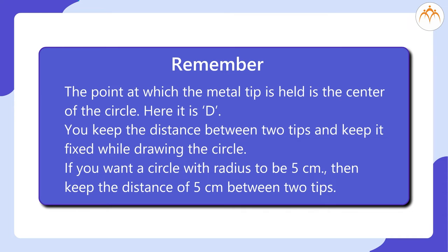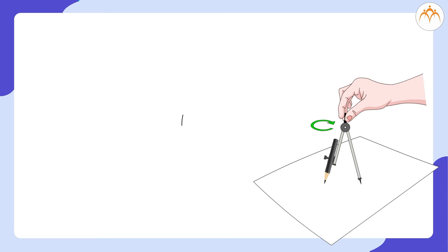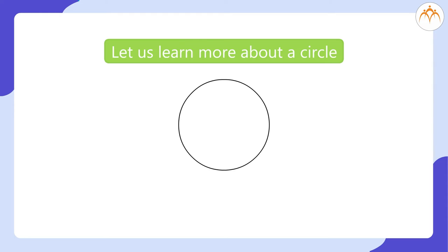You can choose the distance between two tips and keep it fixed while drawing the circle. If you want a radius to be 5 cm, then keep the distance of 5 cm using a scale like this. Now, draw a circle of 3 cm. Excellent! Now, let us learn more about a circle.